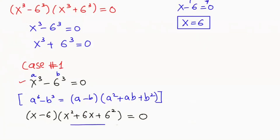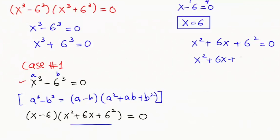Now for the other factor from Case 1: x² + 6x + 6² equals 0, which is x² + 6x + 36 equals 0. Here we get a quadratic equation with coefficients a = 1, b = 6, and c = 36.